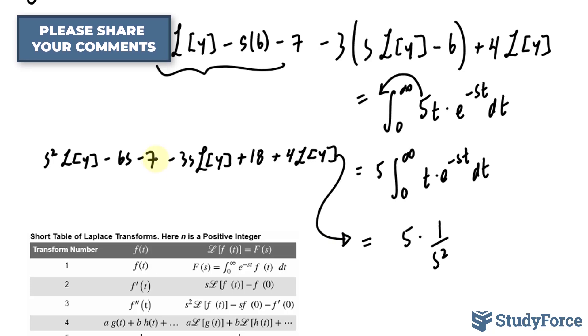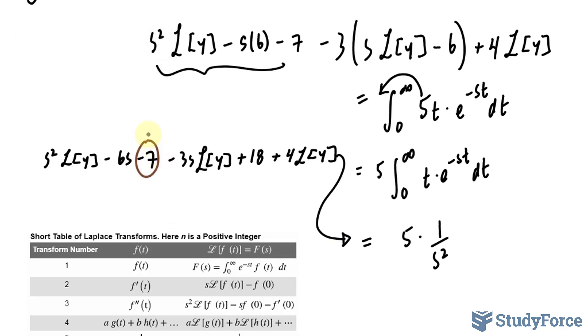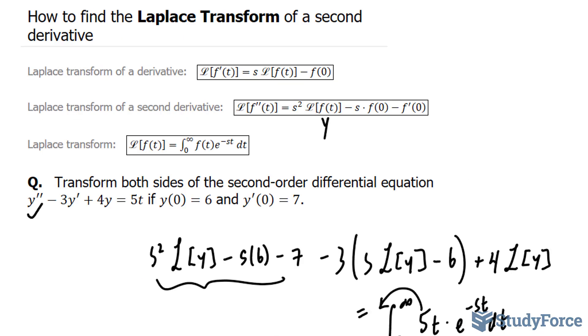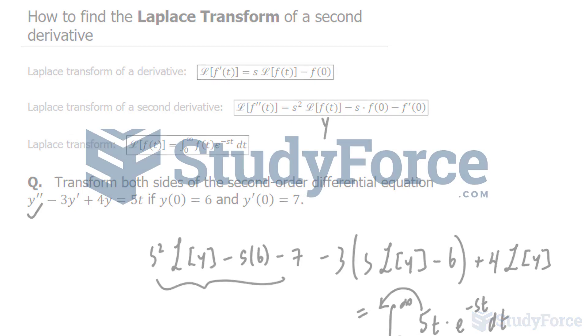If you want to clean this up further, you can combine -7 and 18 to get +11. That's the answer to the question—that's how to find the Laplace transform of a second derivative.